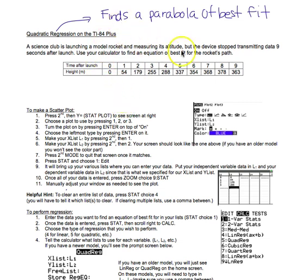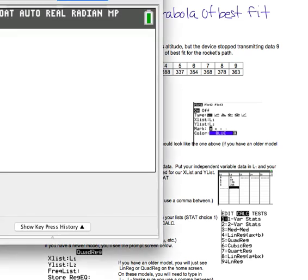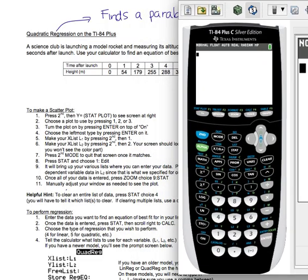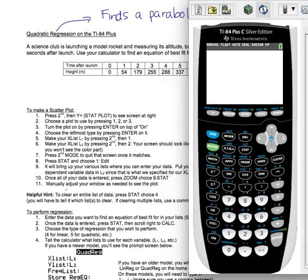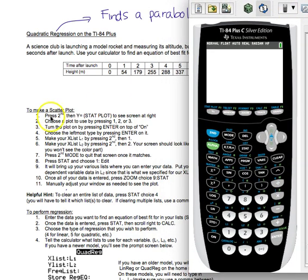So first thing that I want to do is teach you how to do a scatter plot on your calculator. So I'm going to bring my on-screen calculator here and switch back and forth between the two. So here's my on-screen calculator. To make a scatter plot, first you're going to press 2nd and then Y equals. So here's my 2nd button. Here's Y equals.